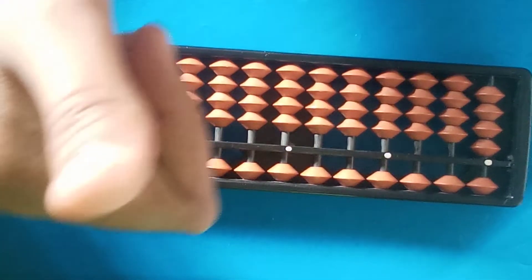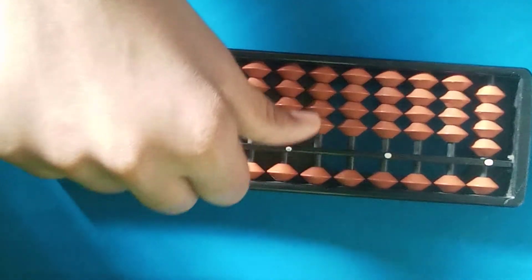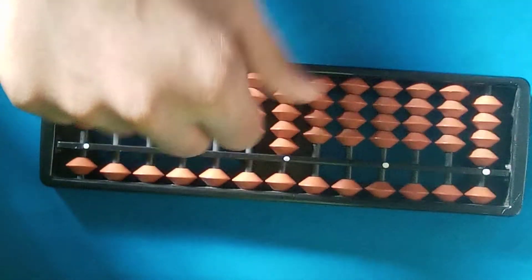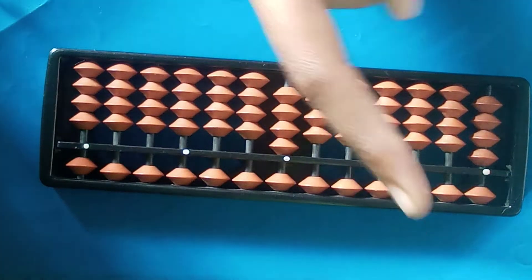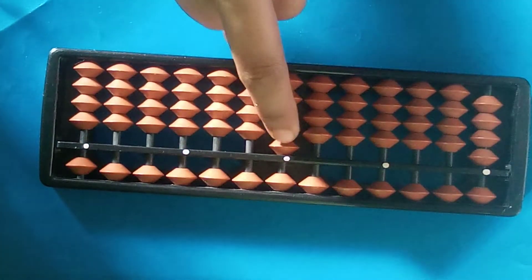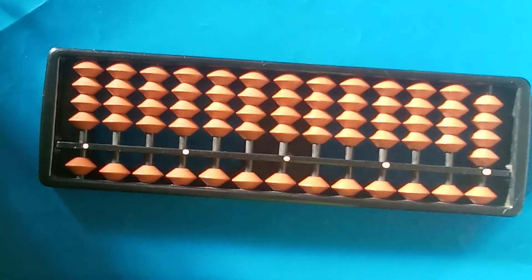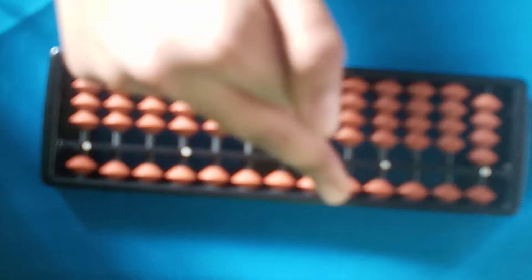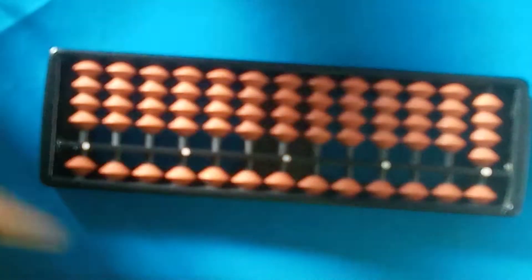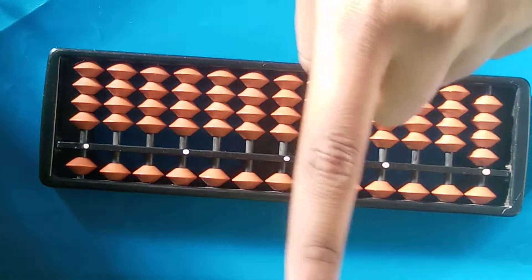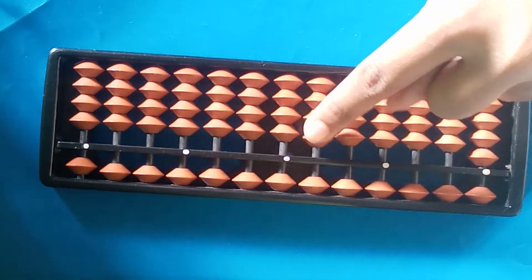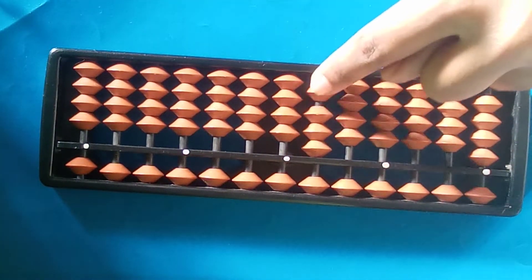So in this video basically we will see the correct way of using the abacus. We will use this thumb to add one, one, one, one, and we will use this finger to less one, one, one, one. We will use this finger to add five and less five. We will use this finger to add ten, ten, ten, ten and less ten, ten, ten.